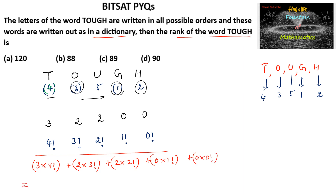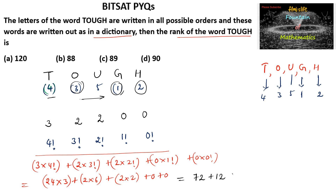So 4! = 24, giving 24 × 3 = 72. 3! = 6, giving 2 × 6 = 12. 2! = 2, giving 2 × 2 = 4. The last two terms are 0. So we get 72 + 12 + 4 = 88.